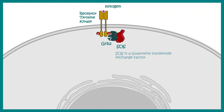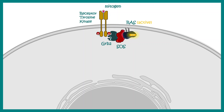SOS actually helps RAS, which is a monomeric G protein, to exchange its GDP and replace it with GTP, thereby activating the RAS protein.